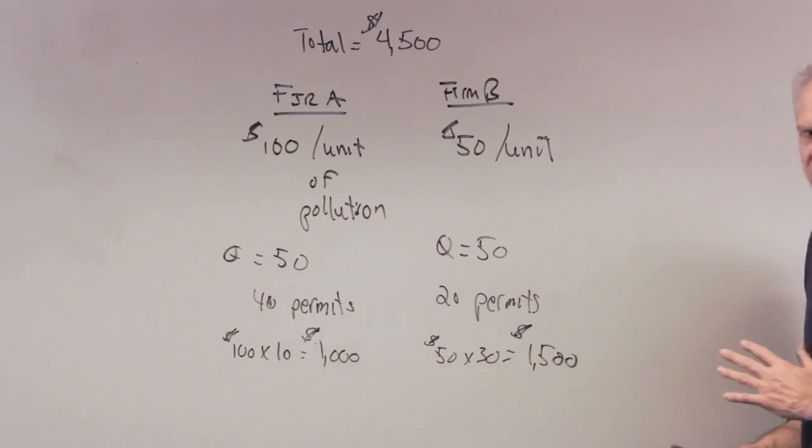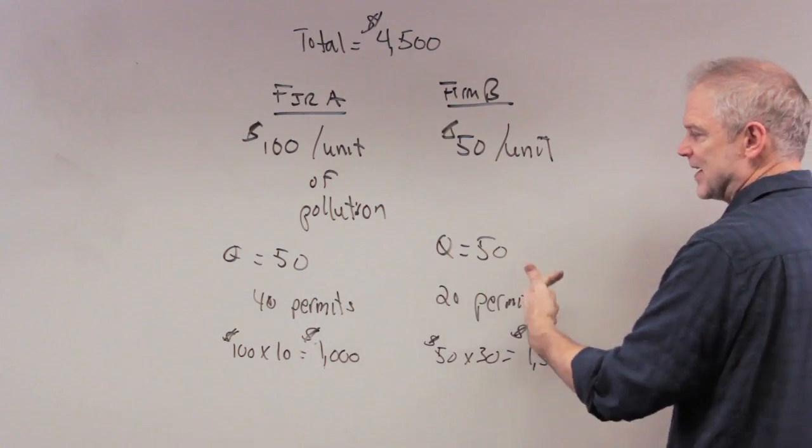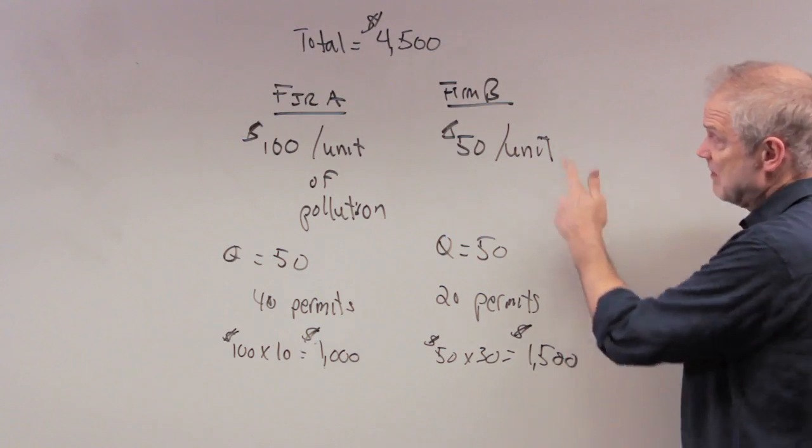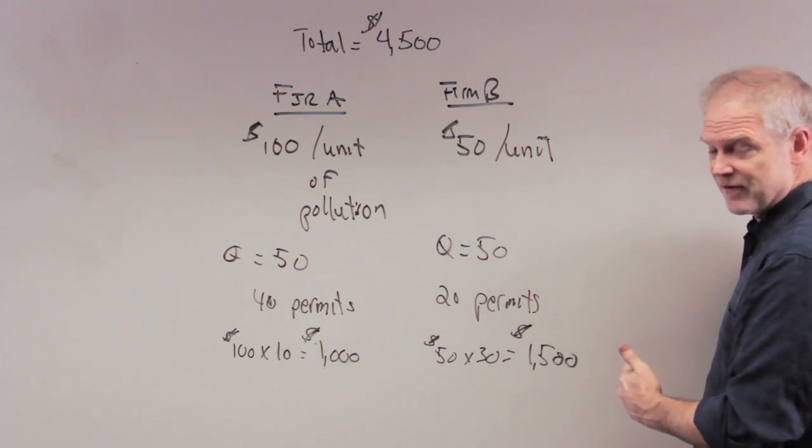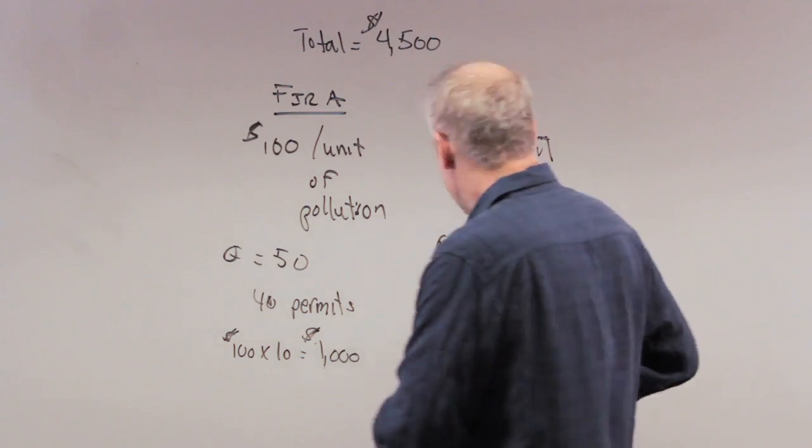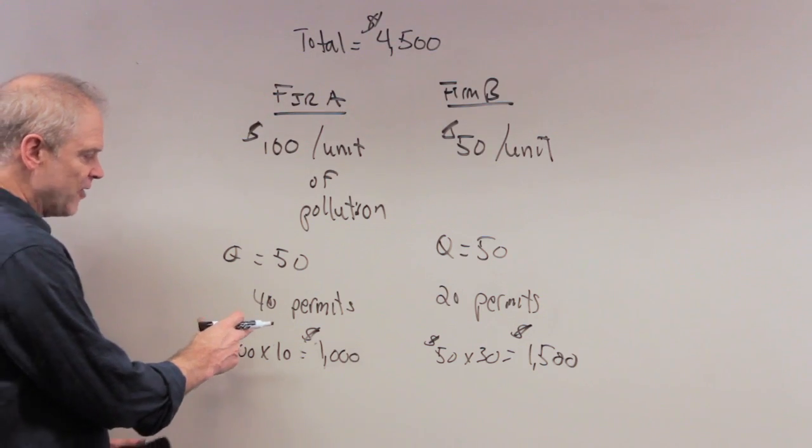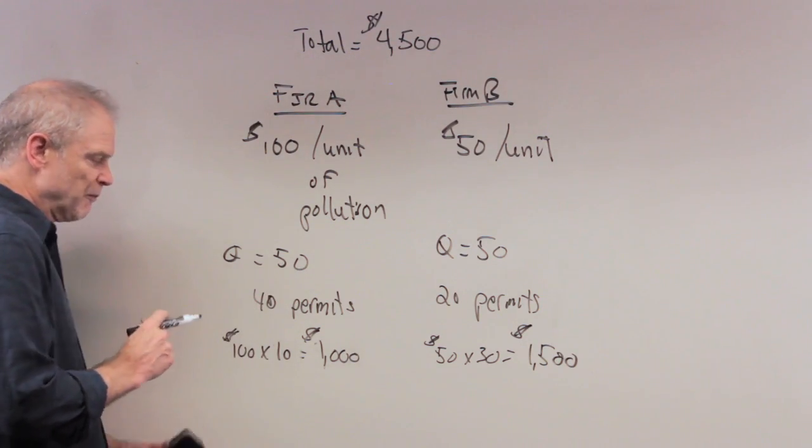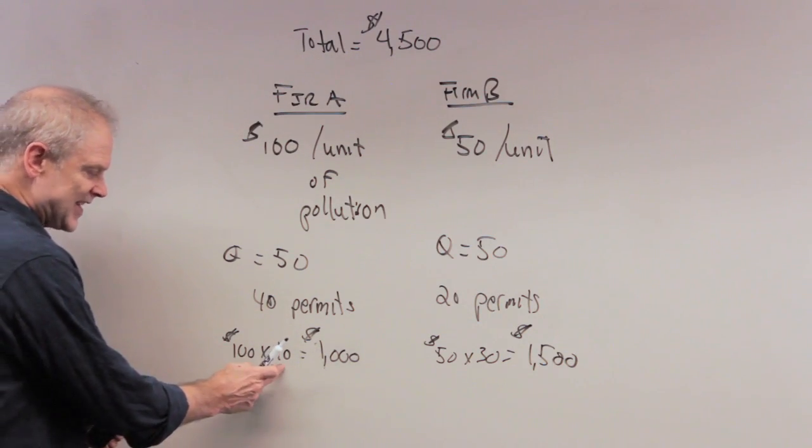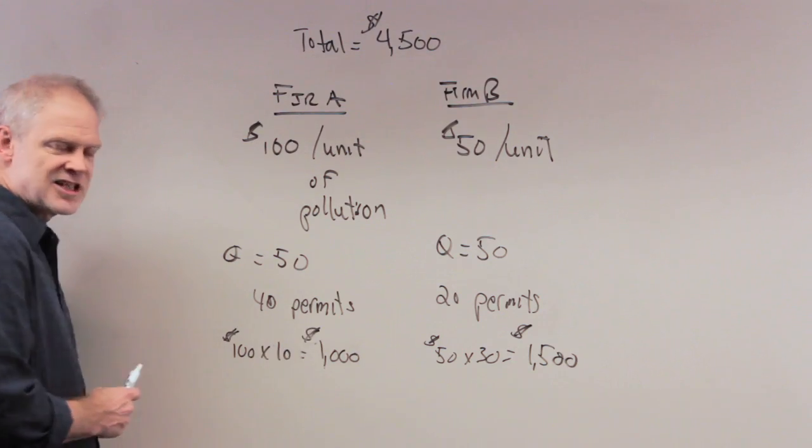Before they weren't allowed to trade permits. Now they are. So firm A, because it's expensive for them to get rid of pollution, goes to firm B and says, can I buy your 20 permits? And firm B is going to say sure, you're going to pay me more than $50, but sure, you're going to have them. And some price between $50 and $100 is going to be worked out between these two firms. The point is though, that these 20 permits now go to firm A. And now firm A only, they have 40 permits, they're allowed to pollute 40 units. They only have to get rid of 10 now to meet the government standard. And so now 100 times 10 is going to cost them $1,000.